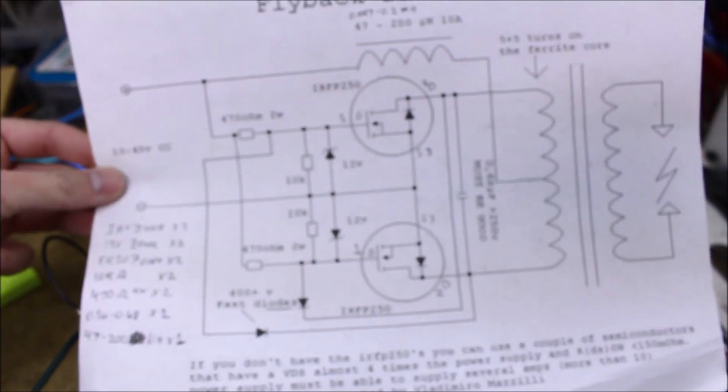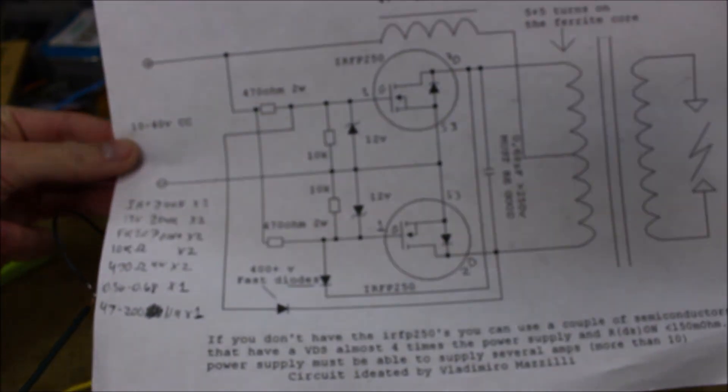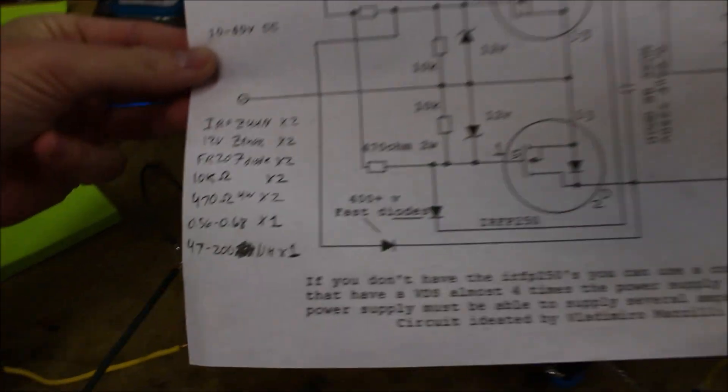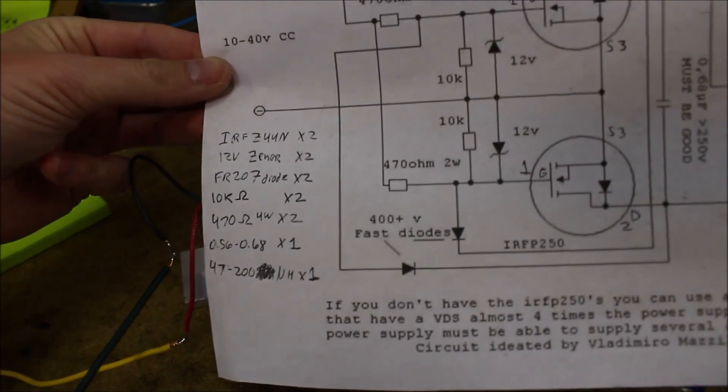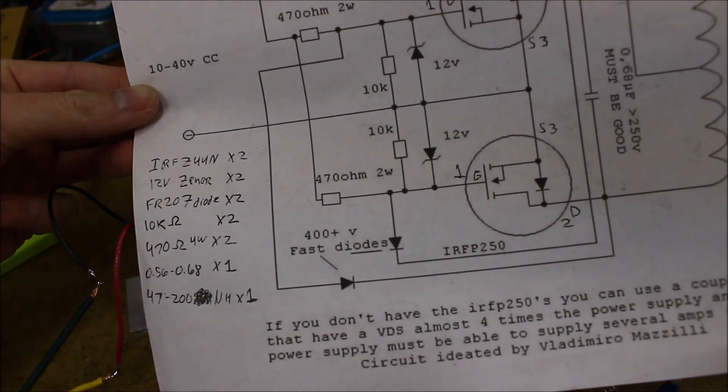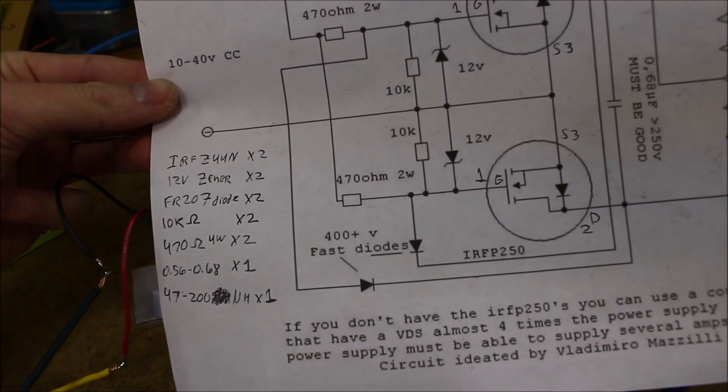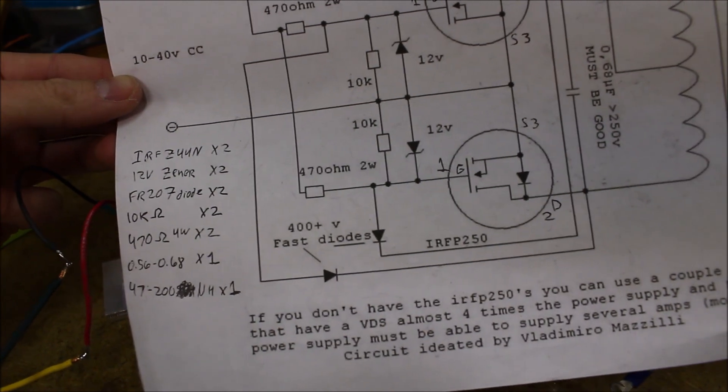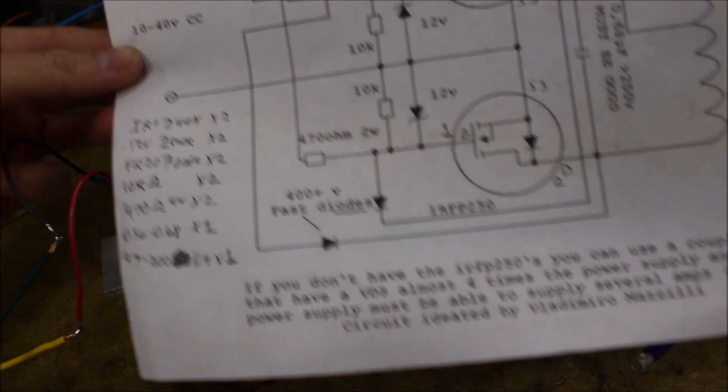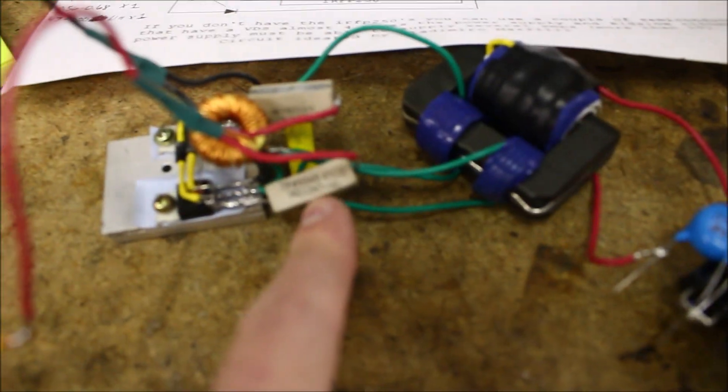So here's the schematic. Focus, there we go. Parts: two IRFZ44 MOSFETs, 12-volt Zener. The fast diodes are FR207, 10k resistors, 470-ohm resistors here.